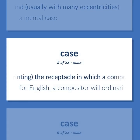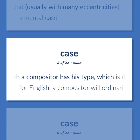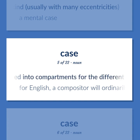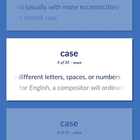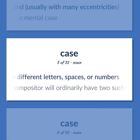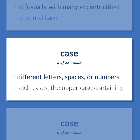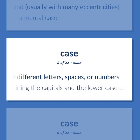Printing: the receptacle in which a compositor has his type, which is divided into compartments for the different letters, spaces, or numbers. For English, a compositor will ordinarily have two such cases — the uppercase containing the capitals and the lowercase containing the small letters.